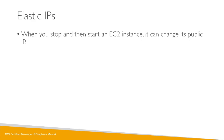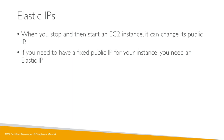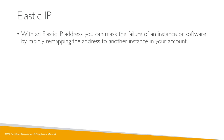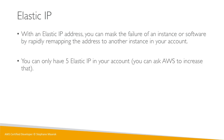For Elastic IPs: when you start and stop an EC2 instance, its public IP will change. If you need a fixed public IP for your instance, you need an Elastic IP. An Elastic IP is a public IPv4 that you own as long as you don't delete it. You can attach it to one instance at a time, and you can use it to mask the failure of an instance by quickly remapping it from one instance to another.